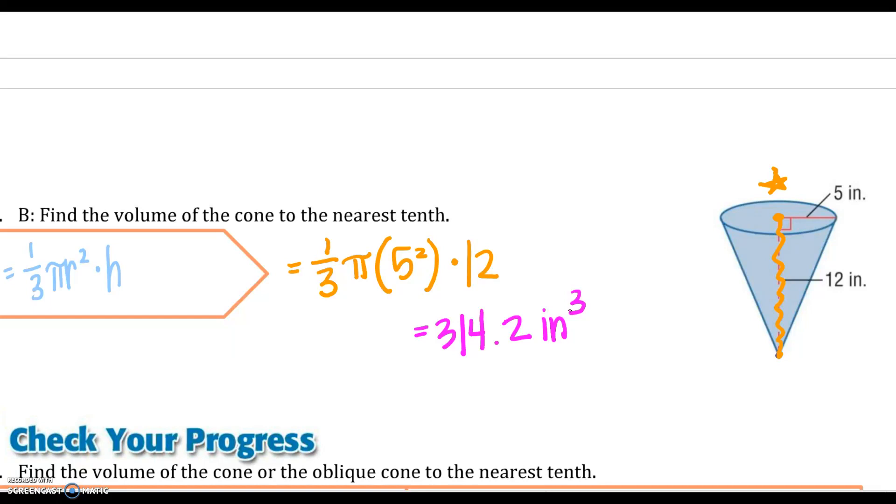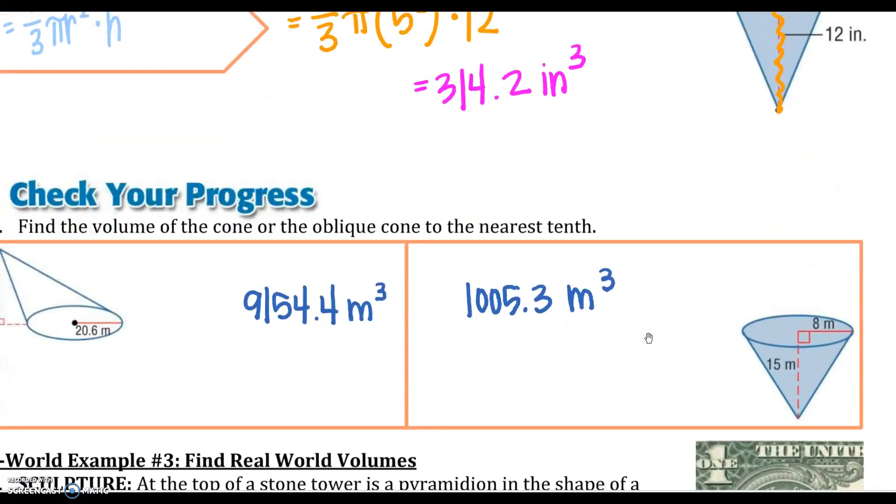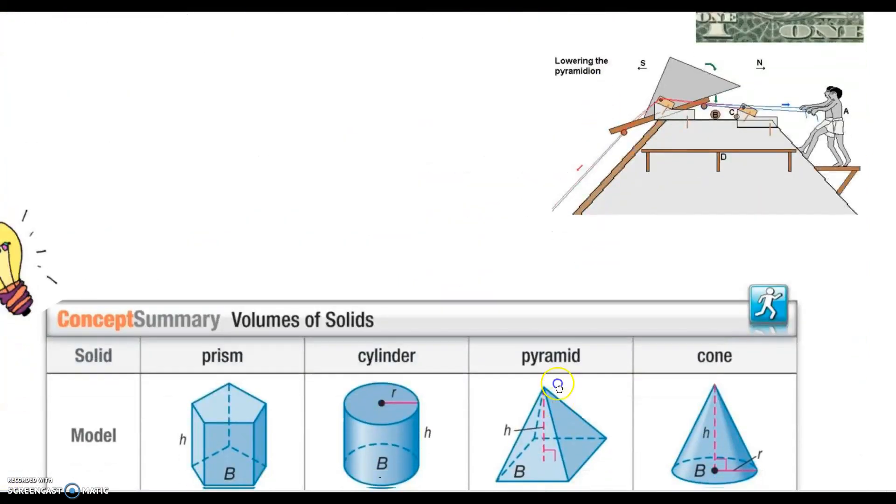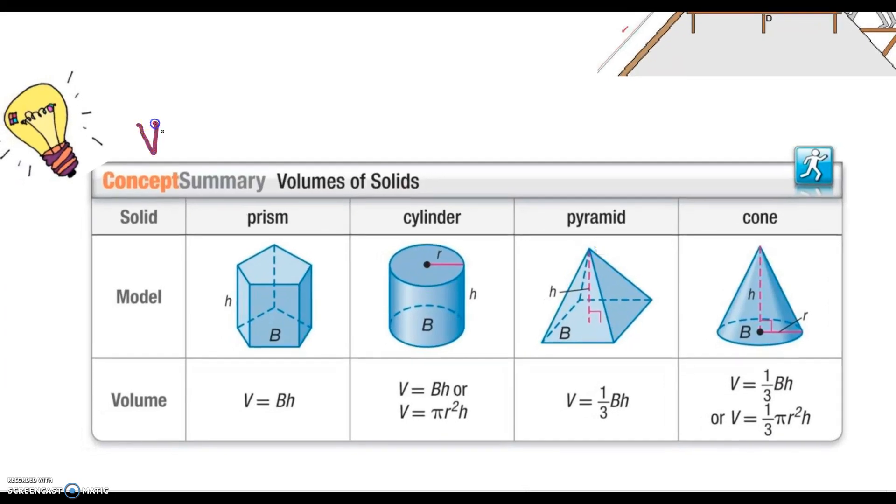There's two check your progresses right below that. Go ahead and complete those two check your progresses, and we can check our answer from there. And there is that. That completes section 4 and section 5. Notice at the bottom of your notes, here are all of your formulas for volume. We have a page for all of our surface area and lateral area, which is from section 2 and 3. That completes section 4 for volume of a prism and a cylinder, and then volume of pyramids and cones was in section 5. Look forward to seeing you back next time.